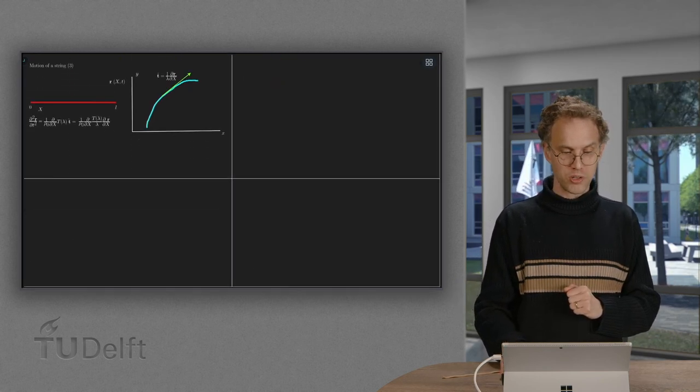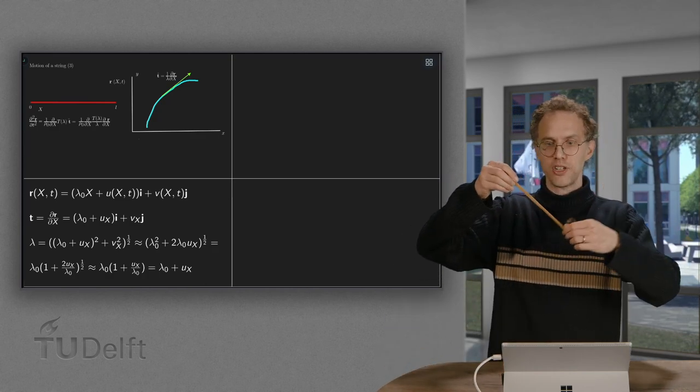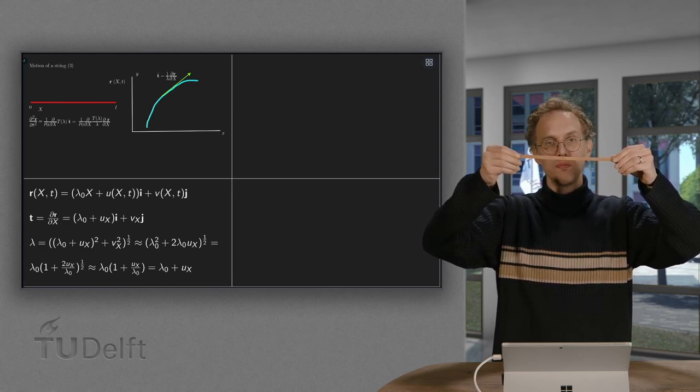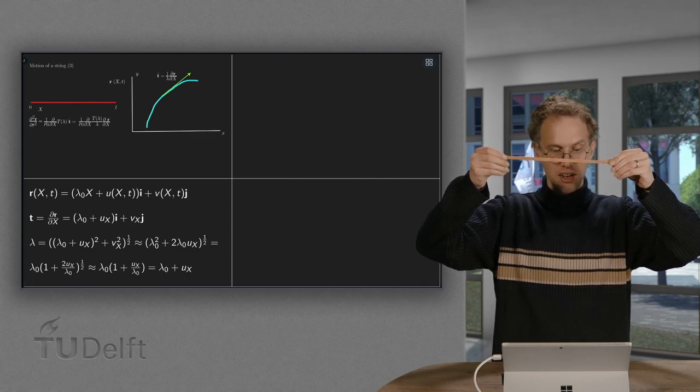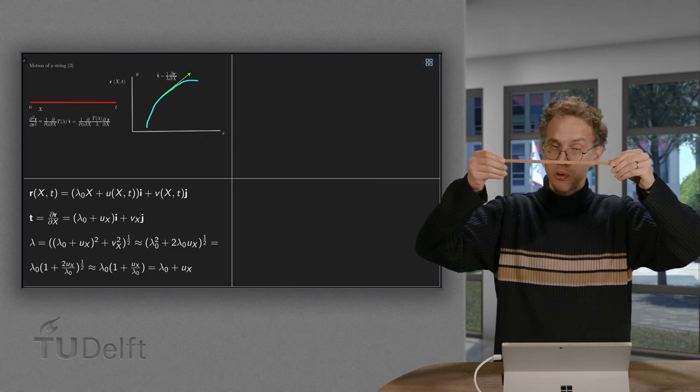So what are we going to do? Well, let's say, okay, first we are in our starting configuration. And then we assume that we first put it slightly to put some tension on it. So we get the r of x and t equals lambda 0 times capital X. We take some constant lambda 0.